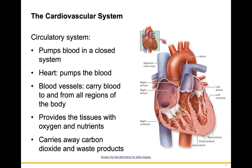The circulatory system pumps blood in a closed system. The heart is the pump; the blood vessels carry blood to and from all regions of the body, providing tissues with the oxygen and nutrients they need, and removing metabolic waste and CO2 from those tissues.